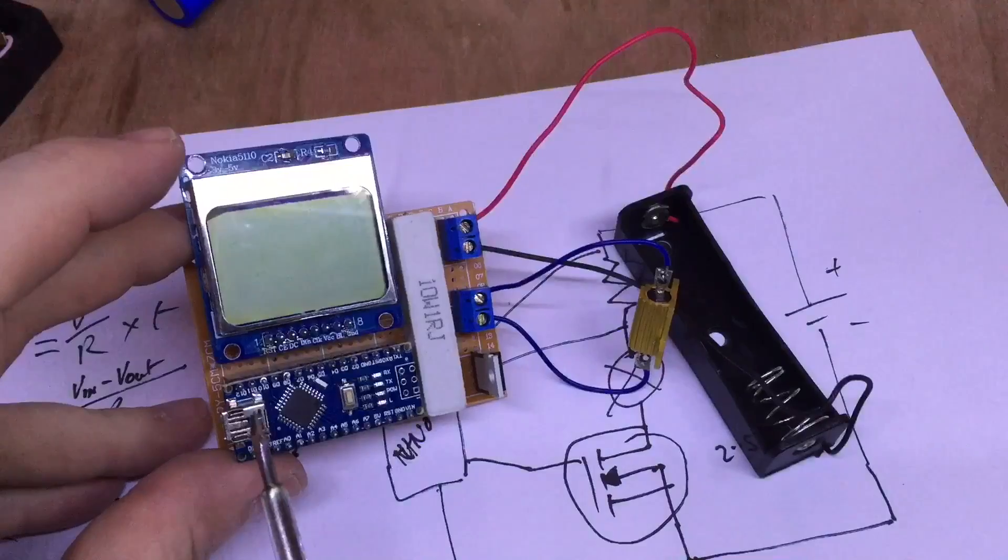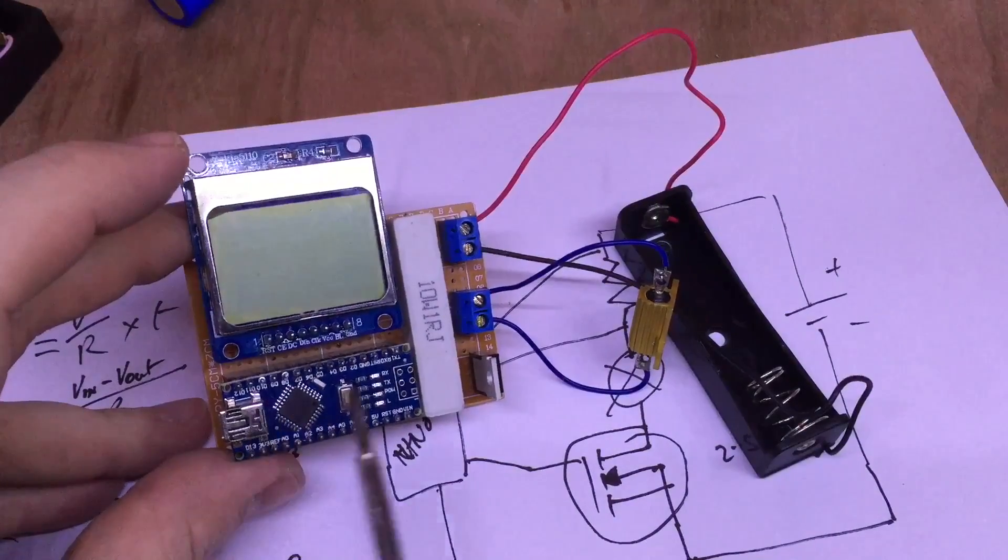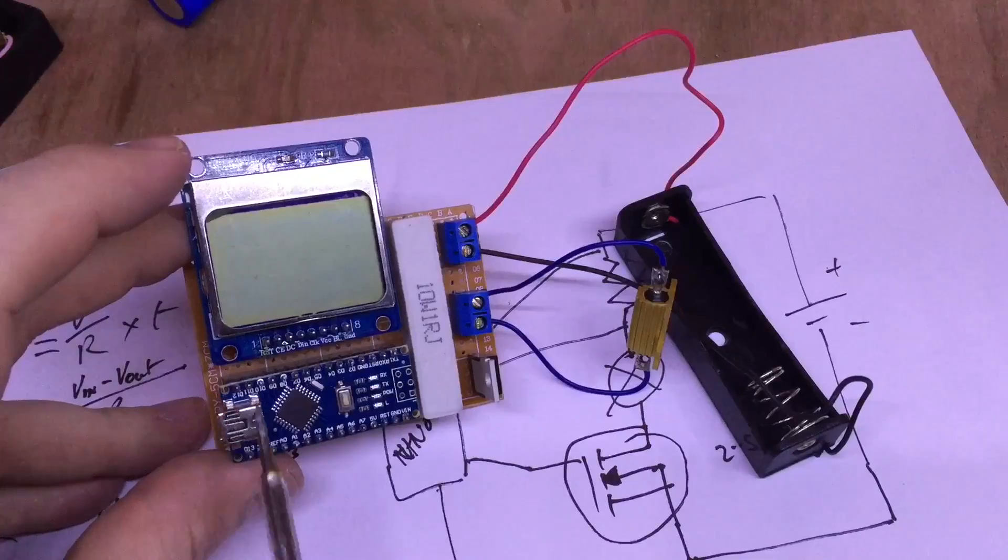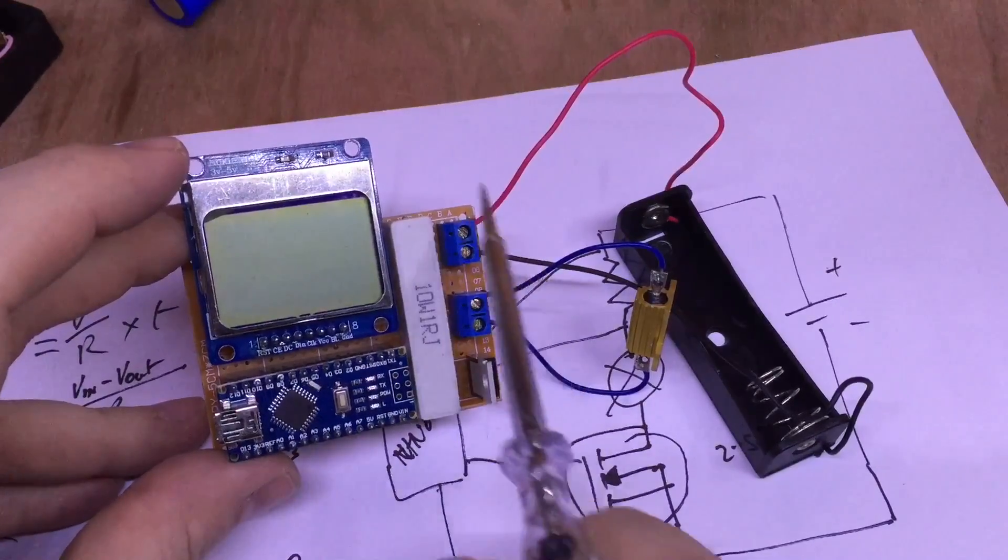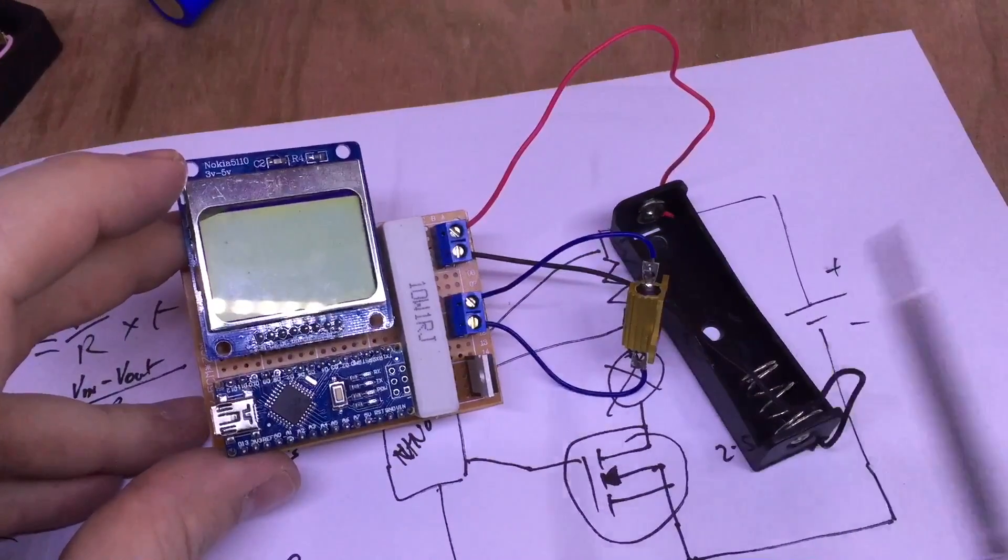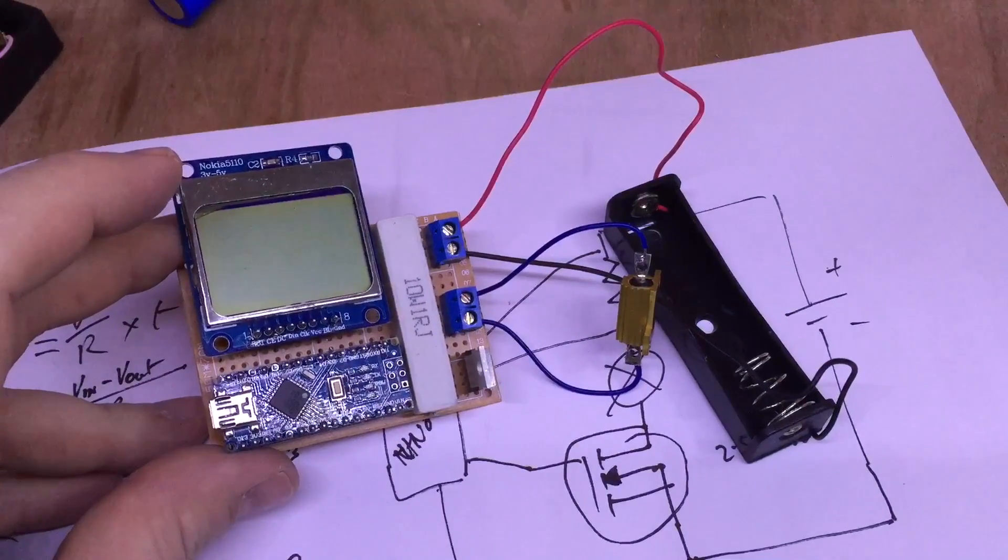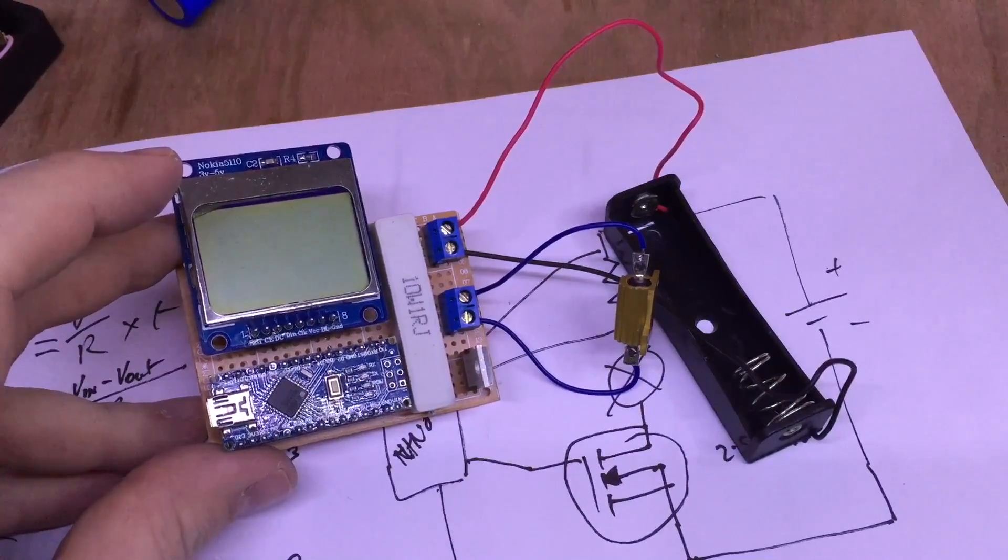So the Arduino will be powered over the USB, so all of this side of the circuit will take its power from there, and then this side, through the load and into the battery, will obviously be taking current and exhausting the battery.